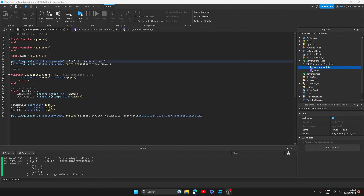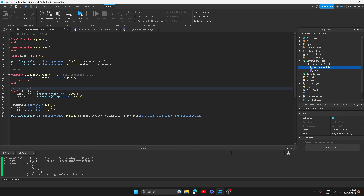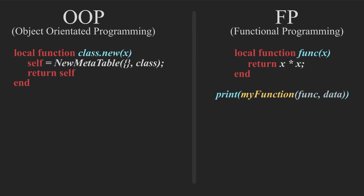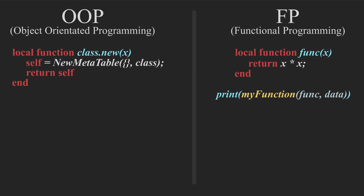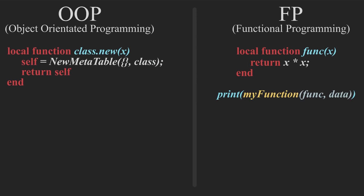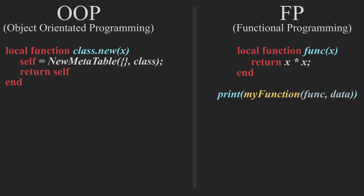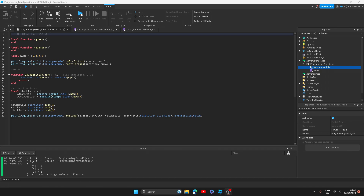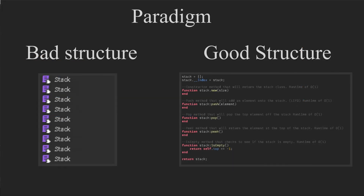Hey everyone, my name is Ash and in today's video we'll be going over new ways that you might not have heard about to make your Roblox Studio scripts even better than they were before. We're going to go over two programming paradigms today: object-oriented programming and functional programming. The idea behind a programming paradigm is almost like a model that's used to structure your layout of code.